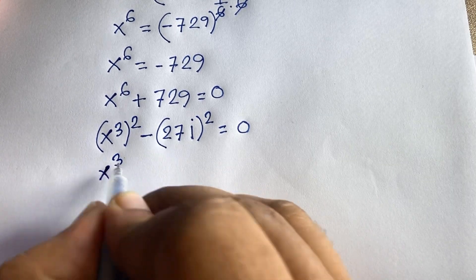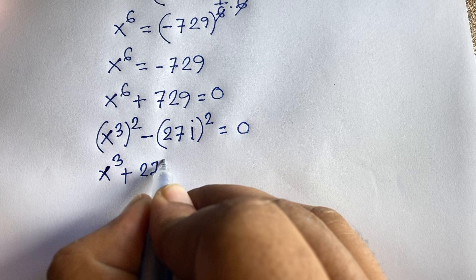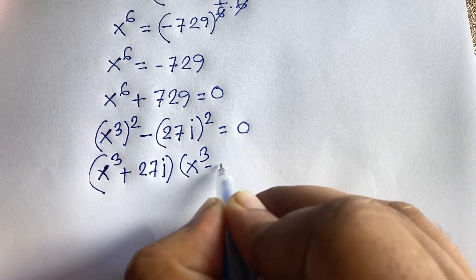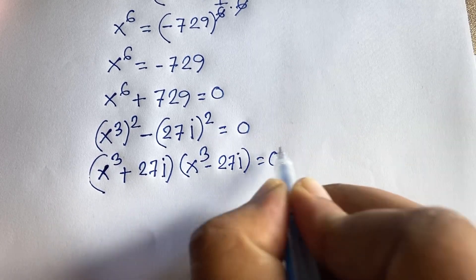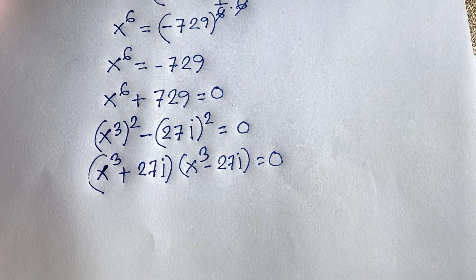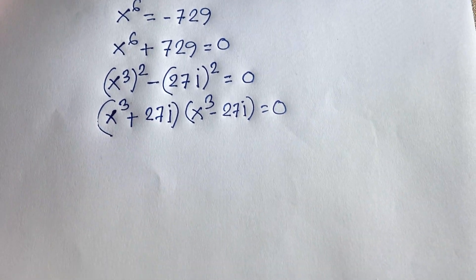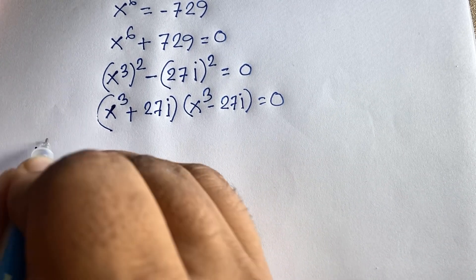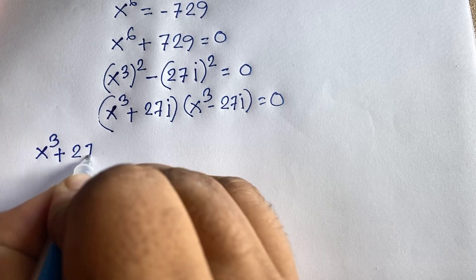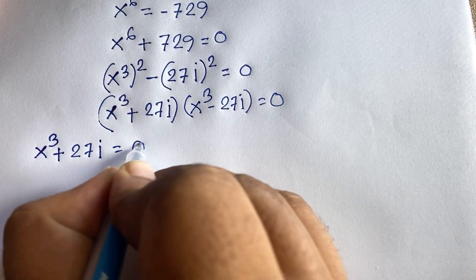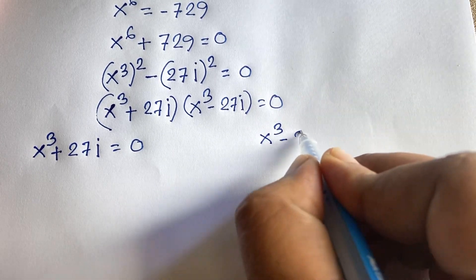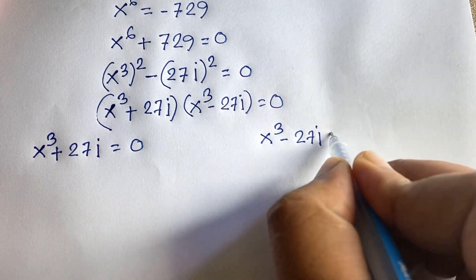Using the difference of squares rule — a squared minus b squared equals (a plus b)(a minus b) — we get: x cubed plus 27i times x cubed minus 27i equals 0. This gives us two cases. Case one: x cubed plus 27i equals 0. Case two: x cubed minus 27i equals 0.